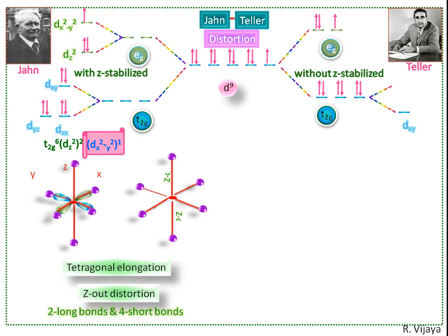This is due to the z component d orbitals having greater overlap with the ligand orbitals, resulting in the orbital being higher in energy.